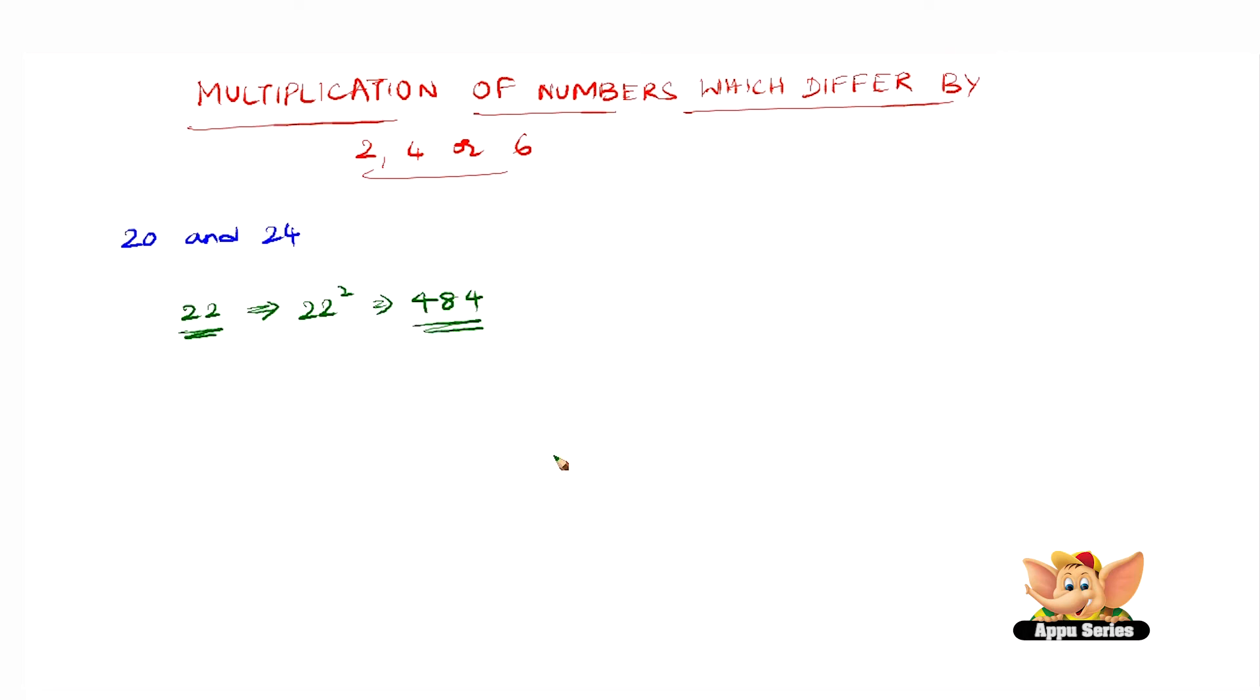Now before we go on to the next step, there is a small note to be considered. The note says that if the difference between two numbers is 2, then subtract 1 from the squared number. If the difference between the two numbers is 4, then subtract 4 from the squared number.